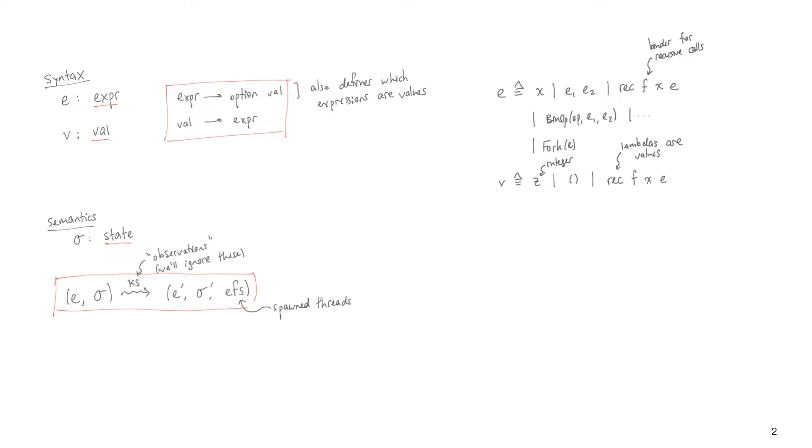And then we need to define a transition semantics. The transitions will be between starting expression and state sigma, and then they'll output a new expression, a new state, as well as a list of spawned threads to support fork.